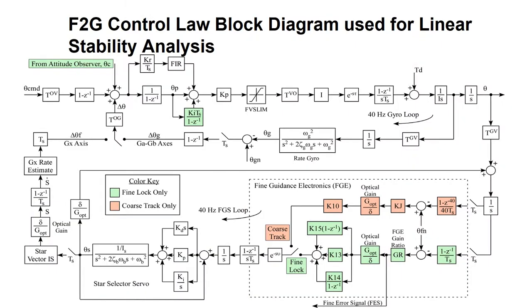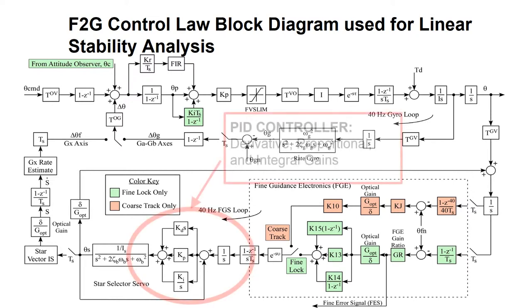This is the F2G control law block diagram. You'd see this in a Simulink code. On the bottom, you'll see a KD, a KP, and a KI, which is your standard PID controller.